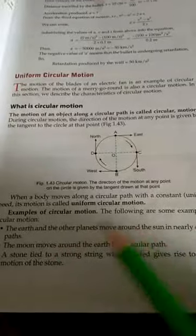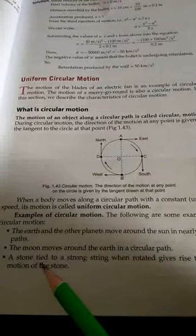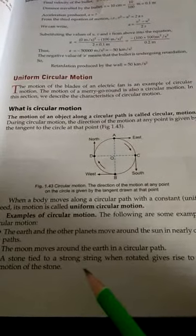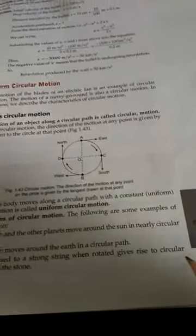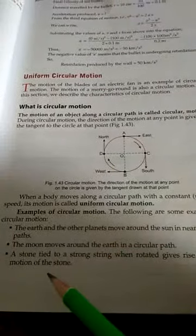The moon moves around the earth in a circular path, and a stone tied to a strong string when rotated gives rise to a circular motion of the stone.